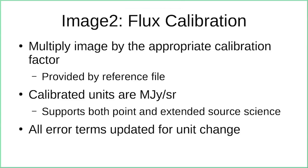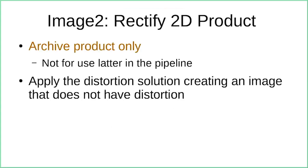One of the major unit changes is flux calibration, determined by observing calibration stars and provided via a reference file. After applying this calibration, the units are in megajanskys per steradian, which directly supports both point-source and extended-source science. This reflects that surface brightness is the inherent unit of flat-fielded images. All error terms are updated for this unit change. Finally, the last step in image two is to produce a rectified 2D product — an archive-only product that applies the distortion solution to create an image with uniform-sized pixels.